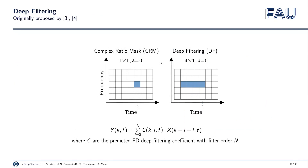Now, what is deep filtering? What we usually do is use a complex ratio mask, where we have one complex coefficient per time and frequency bin that we multiply with the noisy spectrum. What we use instead is deep filtering, where we have multiple coefficients that are multiplied with the corresponding time-frequency bins and then summed up to get the current enhanced time-frequency bin. So essentially this is a complex linear combination — a complex filter of order N, where N is 4. A complex ratio mask is just a special case of deep filtering where the filter order is one.